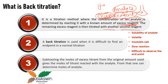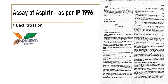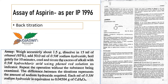Subtracting the moles of excess titrant from the original amount used gives the moles of titrant that reacted with the analyte, from which one can determine the moles of analyte. Let us understand this with the assay of aspirin from the Indian Pharmacopoeia 1996. Aspirin is first weighed, added in ethanol, and 50 ml of sodium hydroxide is added. Since aspirin is acidic, it reacts with sodium hydroxide, which is added in excess.